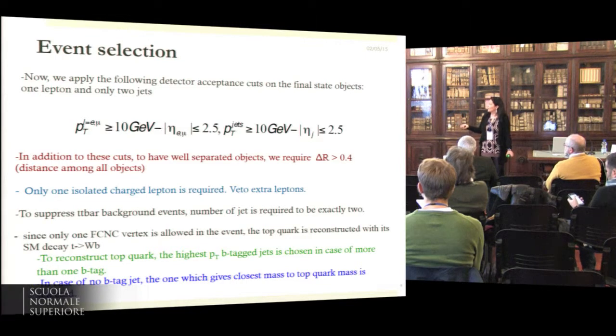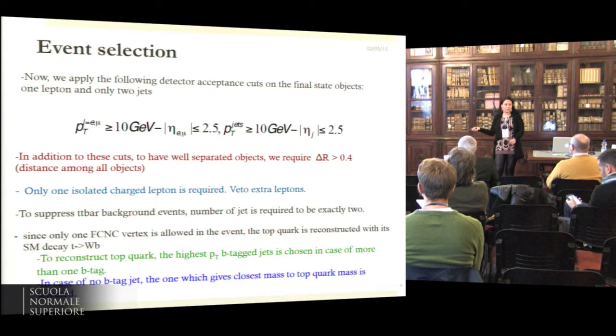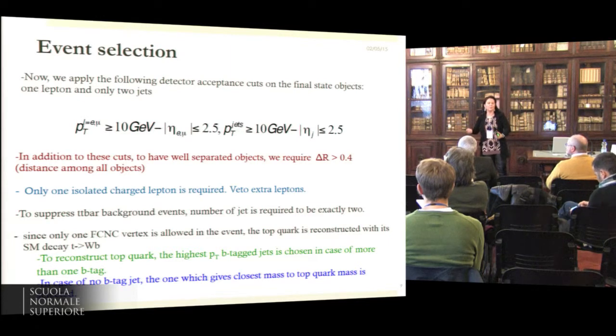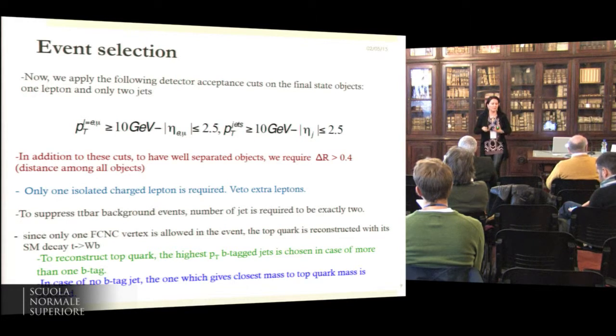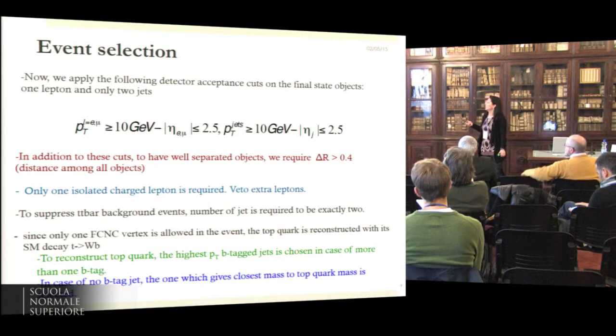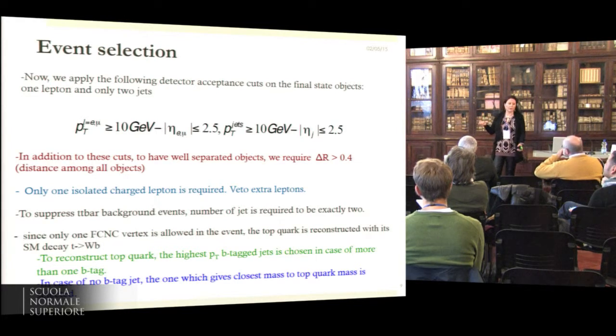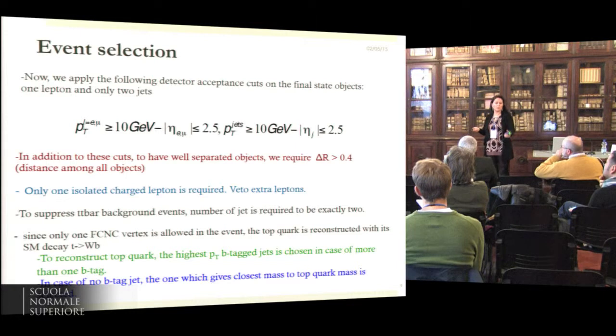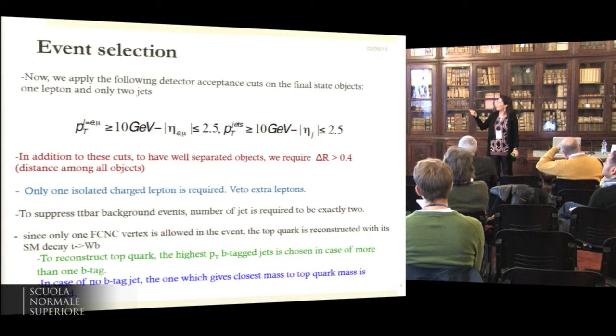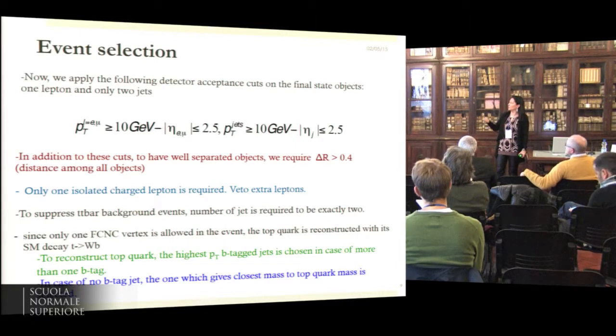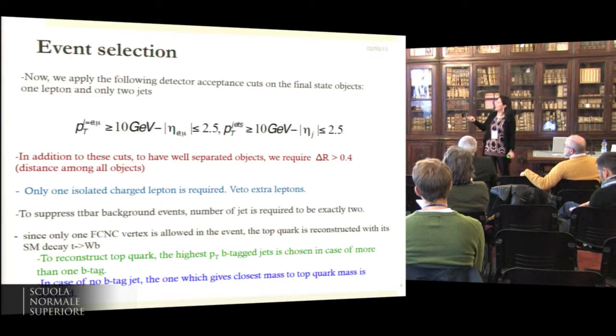The event selection is quite simple. Another comment we can make—we hope to improve in the next iteration—is that this is a very classical hadron collider kind of analysis. We're seeing ways of improving by profiting from the lepton collider final state, but in this case it's a simple requirement on the final state objects: one lepton and two jets, one of them should be a B, all these objects should be well separated, and to suppress the background events there is a cut on the number of jets in the final state to two.